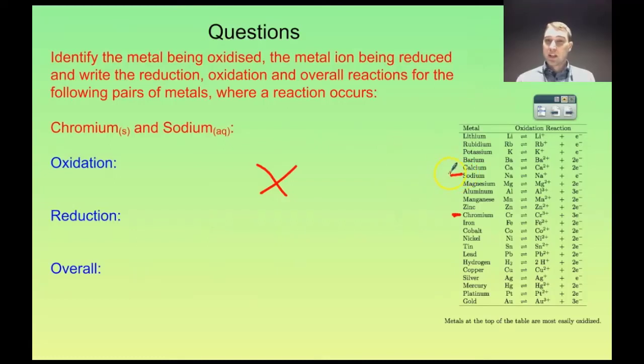And again to explain, sodium oxidizes really easily, so it's oxidizing to its ions very, very easily. And that means it's very hard to push it back the other way. So the chromium oxidizing here is not going to be able to force the sodium ions to reduce back to the solid sodium by producing electrons. You need to put in an awful lot of energy to get that to happen. So in this case the reaction won't happen again either.